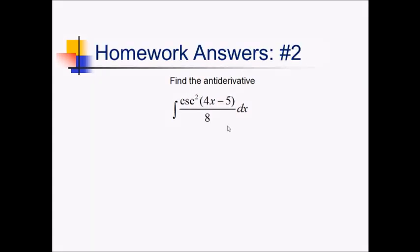On this problem, this is essentially one-eighth times cosecant squared of all this stuff. The antiderivative of just cosecant squared of something would be negative cotan of the something, but since this something has a derivative that's not just one, we're going to divide by the tail here. Since it's just a linear function in here, we can just divide by the derivative, which is going to be 4 we're dividing by. So, we're going to have negative 1 over 32 cotan of 4x minus 5, plus c.